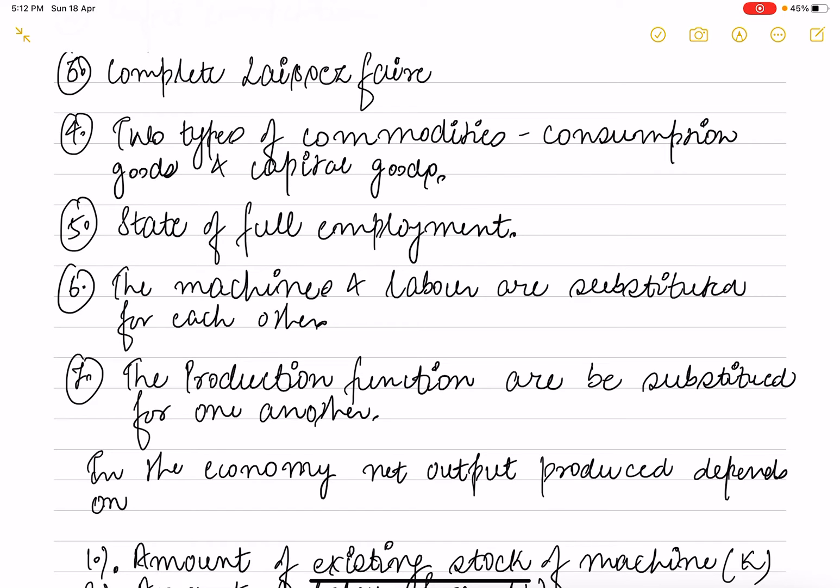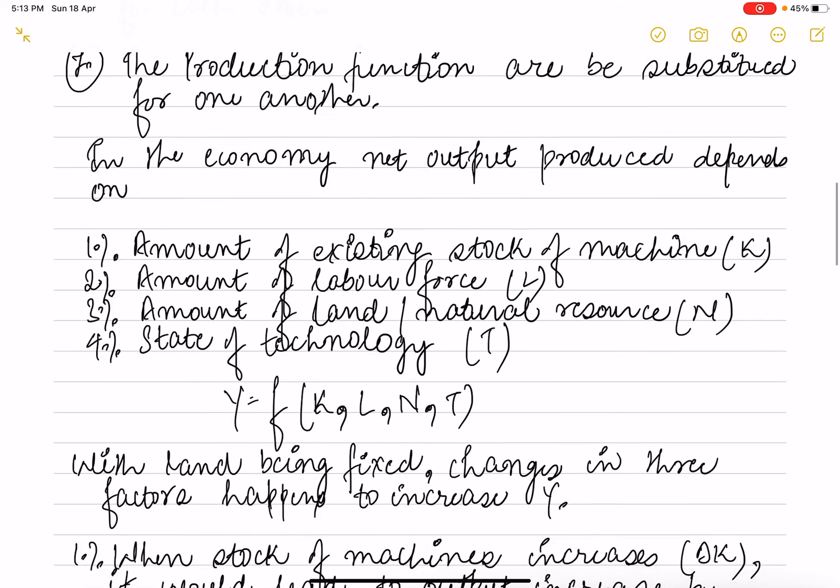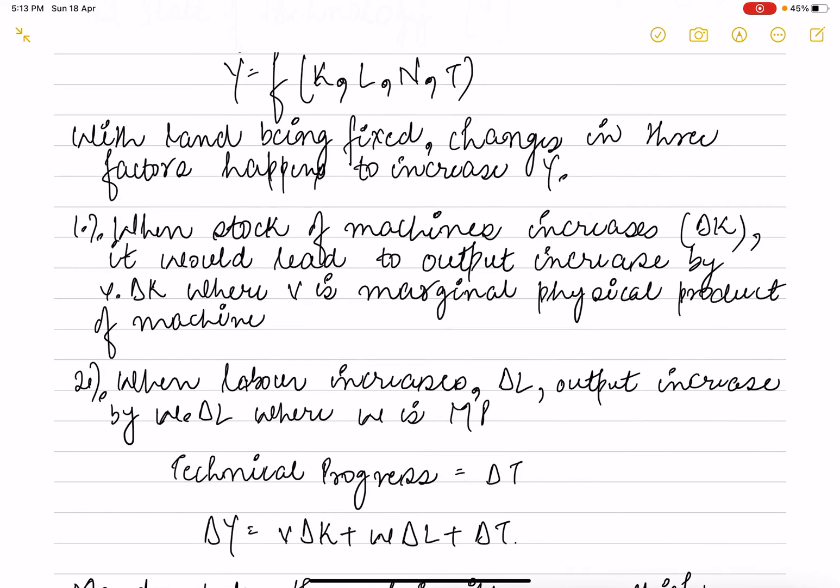Sixth, output depends on four major components: the amount of existing capital stock of machines (K), amount of labor force (L), amount of land or natural resources (N), and state of technology (T). So output is a function of capital, labor, land, and technology.